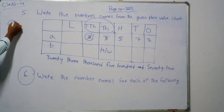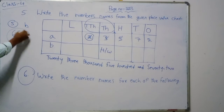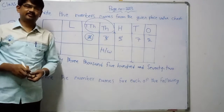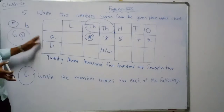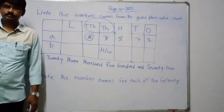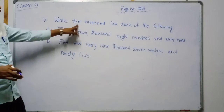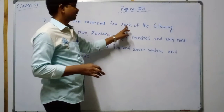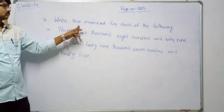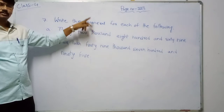So total homework: question 5B and question 6 — try yourself. Next, the seventh question: write the numeral for each of the following. The task here is to write numerals. Words are given — numbers are written in their word form.